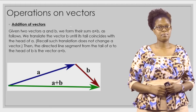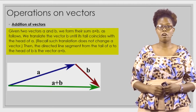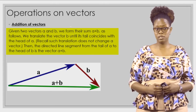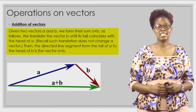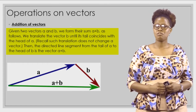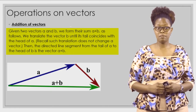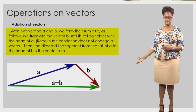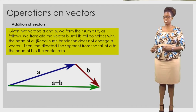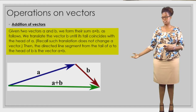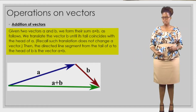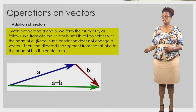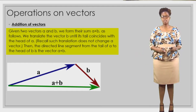Operations on vectors — addition of vectors. Given two vectors a and b, we form their sum a plus b as follows: we translate vector b until it coincides with the head of a. Such a translation does not change a vector. Then the directed line segment from the tail of a to the head of b is the vector a plus b. The resultant vector would be the sum of the two vectors.